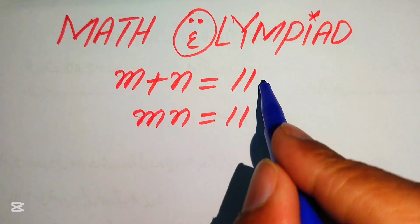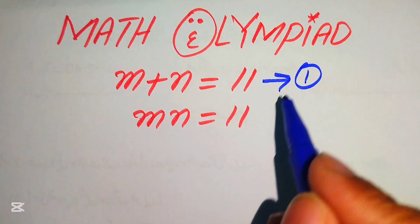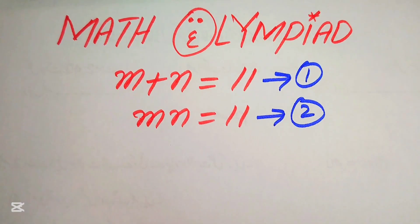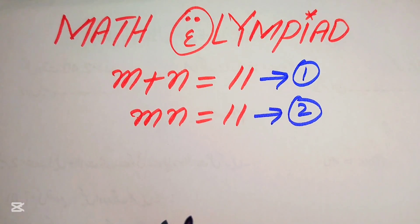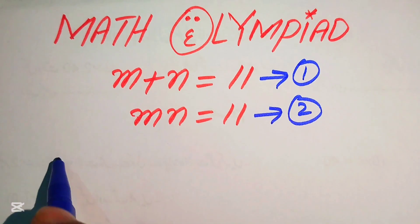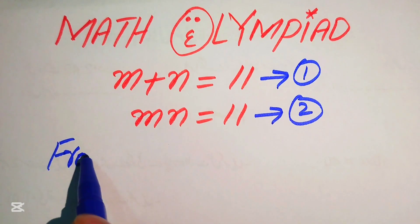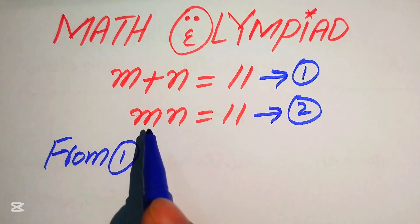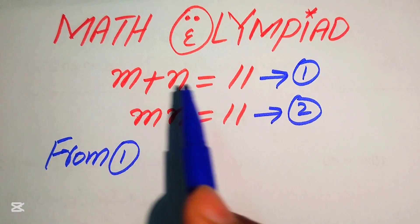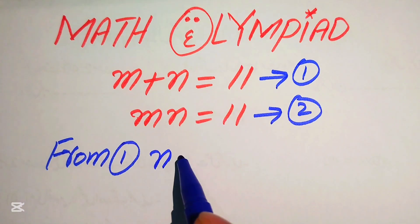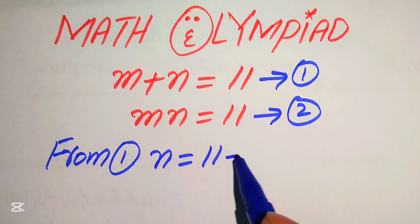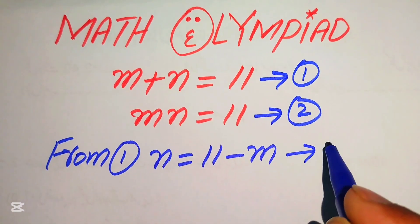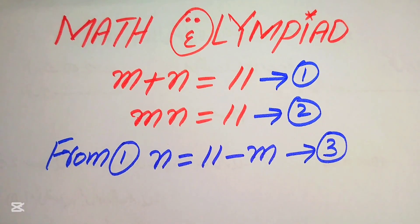We call this equation number 1 and this equation number 2. From equation number 1, we move m to the right-hand side and it becomes n equals to 11 minus m, and we call this equation number 3.